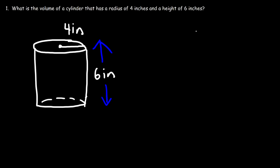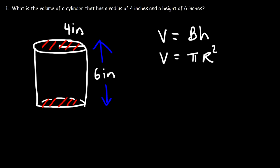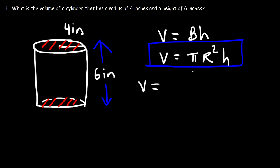The volume of a cylinder is the base times the height, where the base is the area of the circle, which is pi r squared. So the volume of a cylinder is pi r squared times the height. All we need to do is plug in the values: the radius is 4 inches and the height is 6.